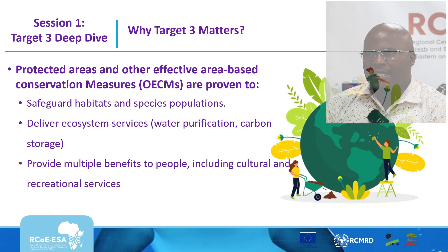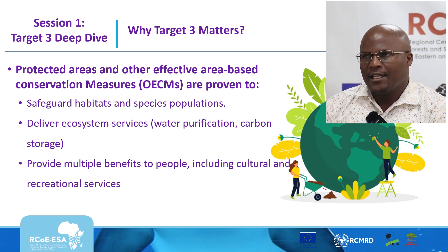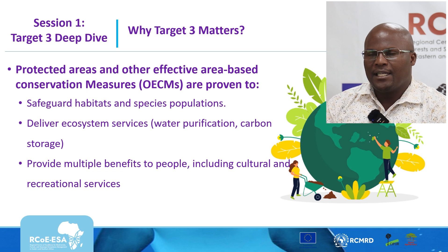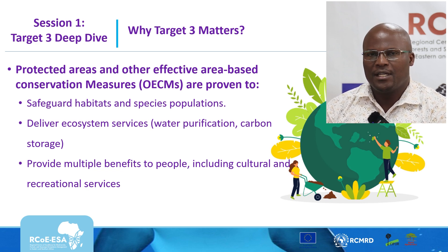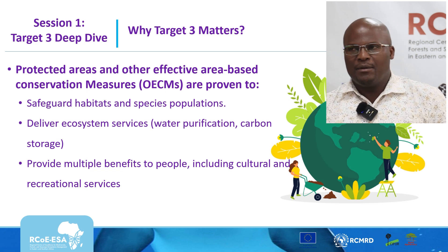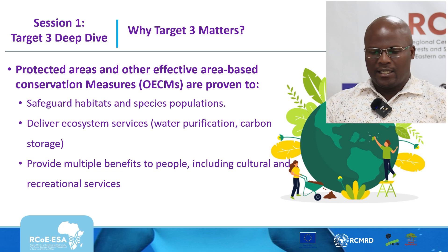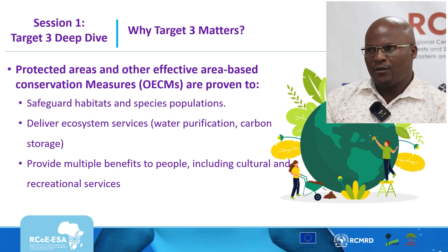We are focusing on target 3 because protected areas and OECMs have been proved to safeguard habitats and species populations. They also deliver ecosystem services in terms of water purification, carbon storage, among others. They also provide benefits to people, including cultural and recreational services. There are about eight elements of target 3.